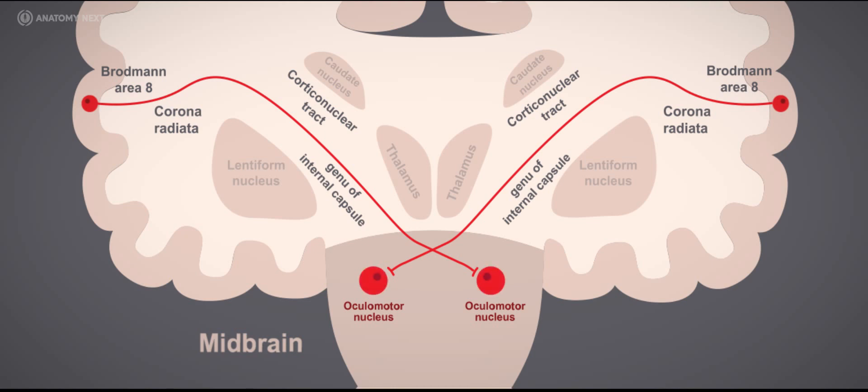The information from the cerebral cortex has now reached the second neuron, also known as the lower motor neuron, of the oculomotor nerve pathway. Simple, right?